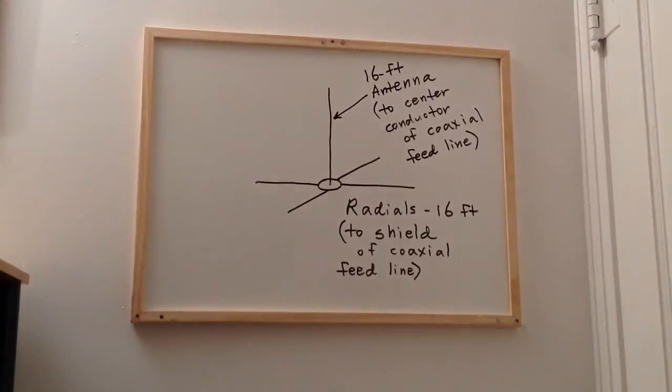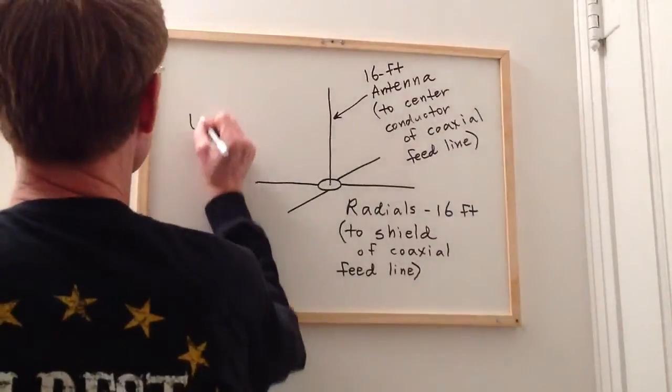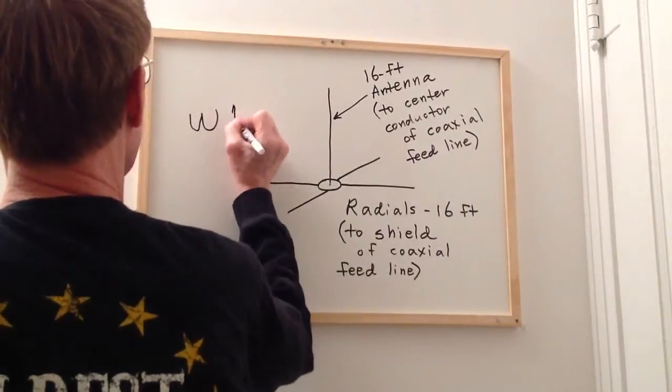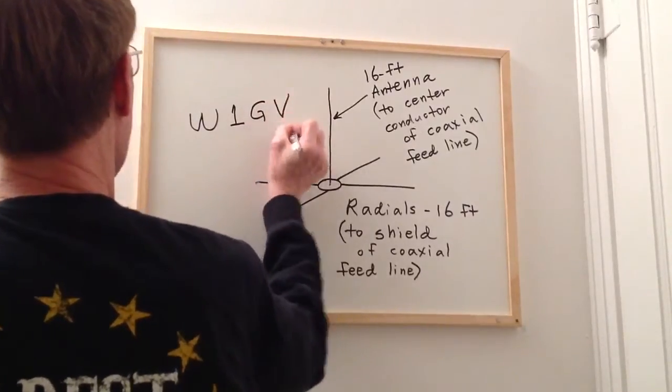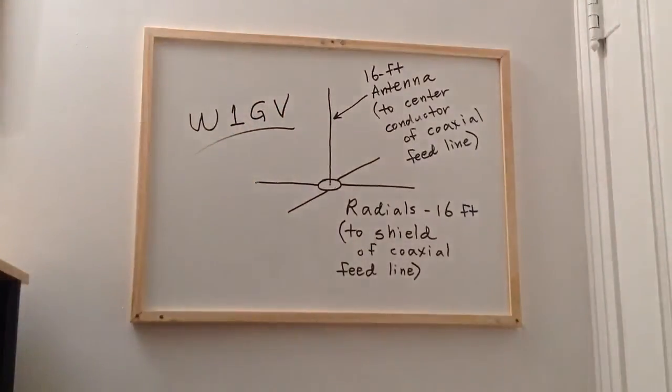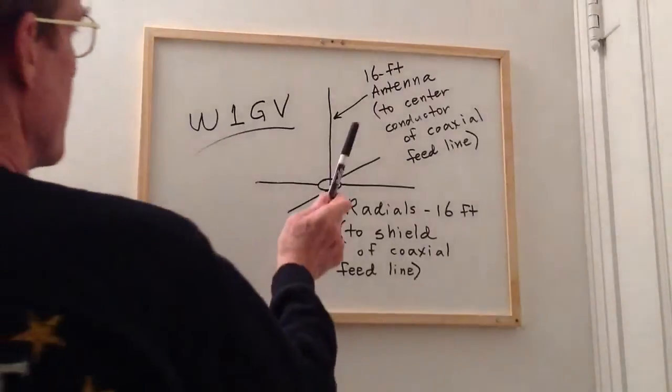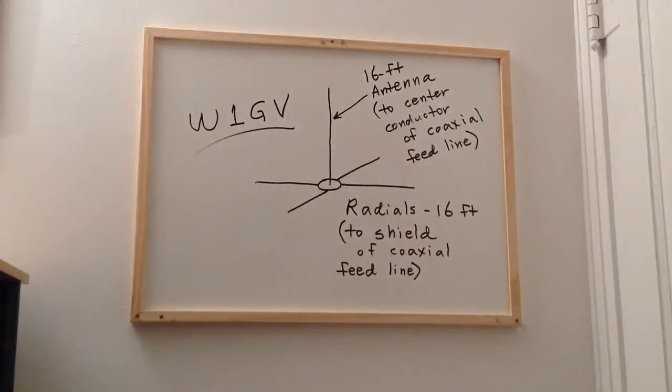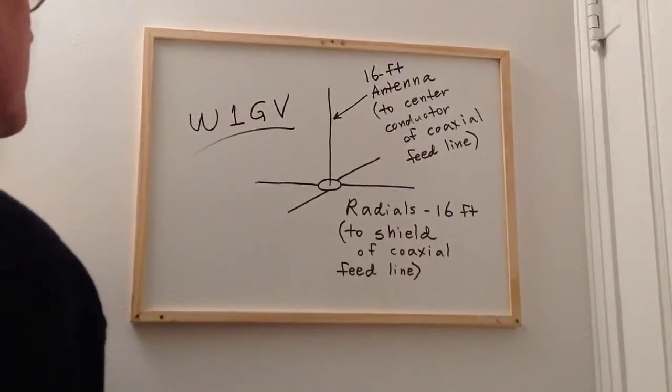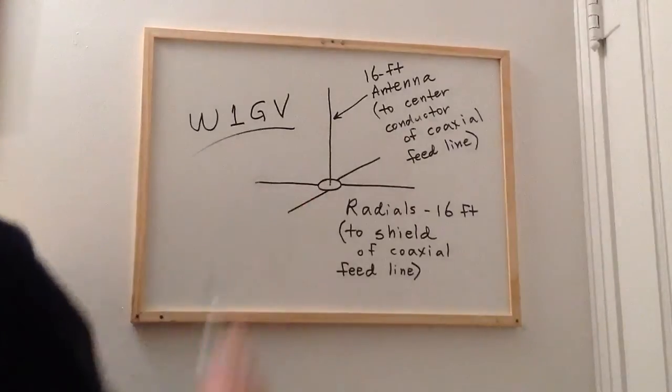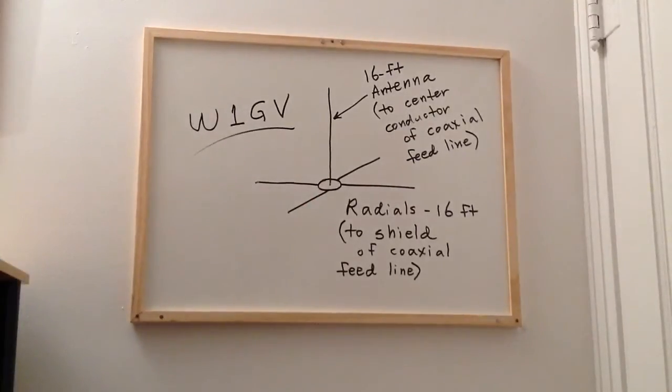Stan Jibalisco here, ham radio operator and station Whiskey One Golf Victor. I'm here to explain the principle of operation behind my deck-mounted vertical ground plane antenna. This is the original design that I used: a 16-foot vertical radiator.